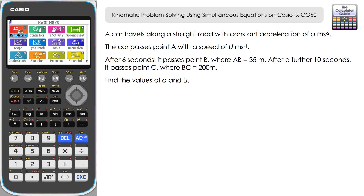Let's take a look at the question. A car travels along a straight road with constant acceleration of A meters per second squared. The car passes point A with a speed of U meters per second. After six seconds it passes point B where AB equals 35 meters. After a further 10 seconds it passes point C where BC equals 200 meters, and we've got to find the values of A and U.